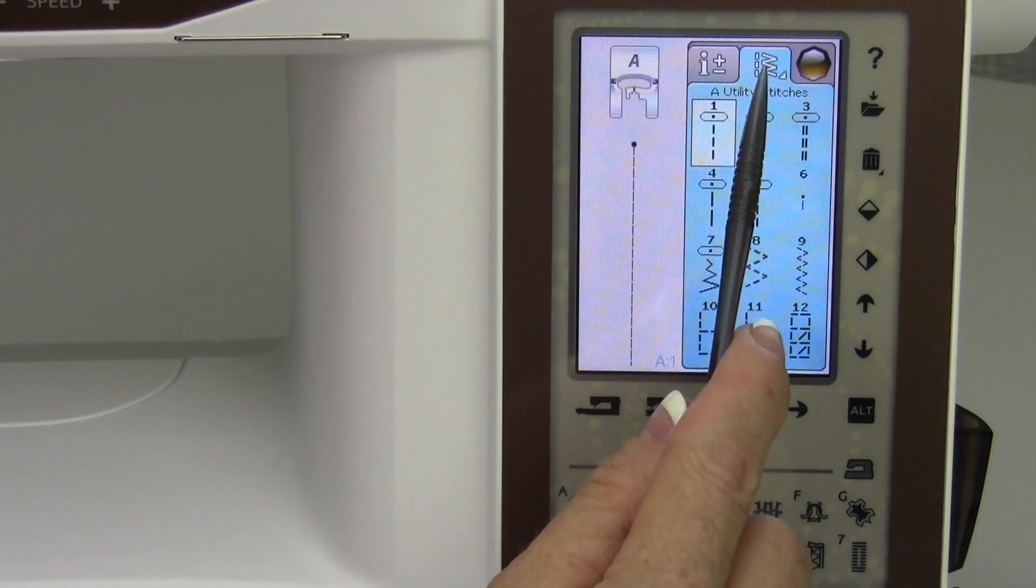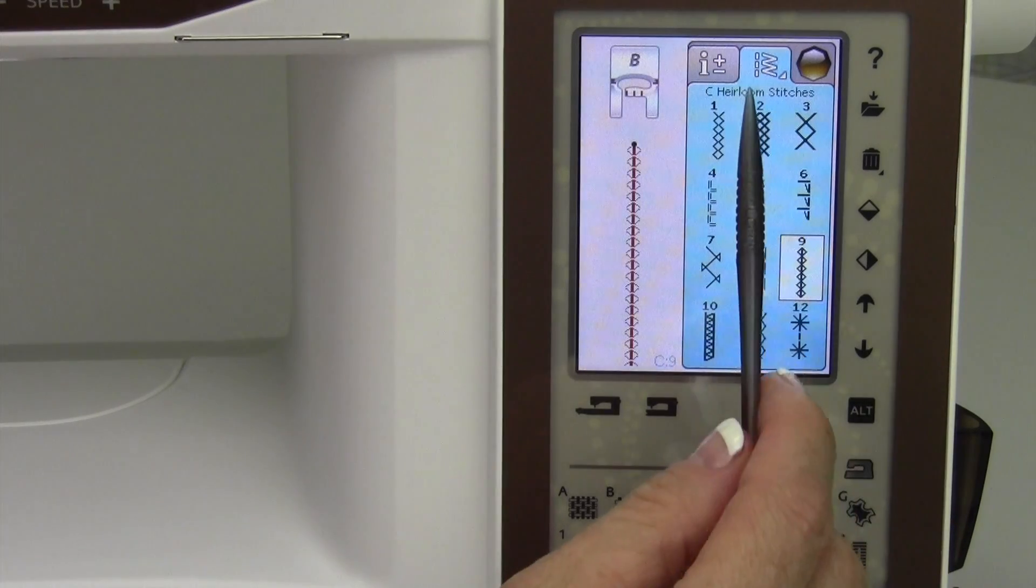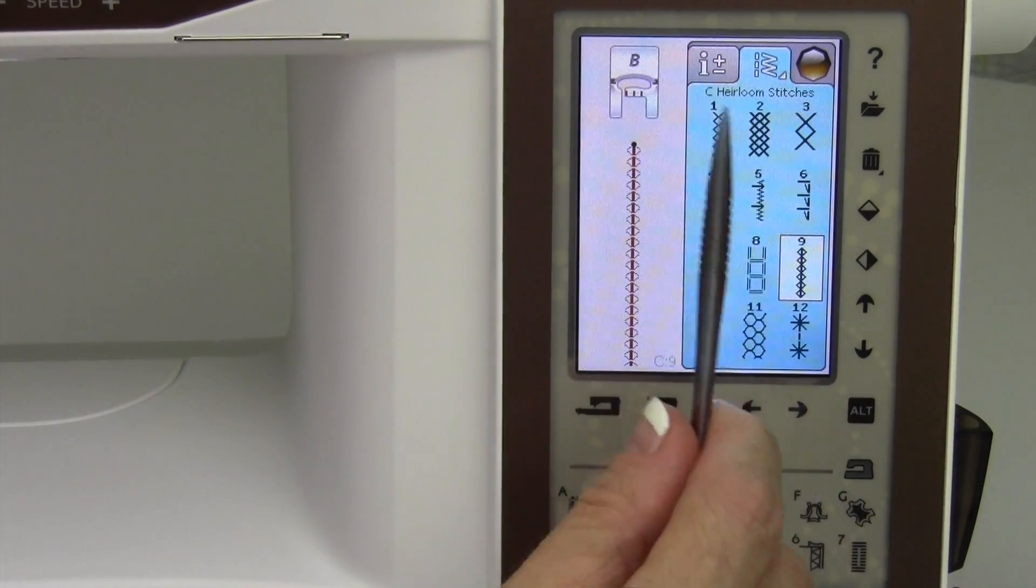Here is a faster way. Let me just pull up a random decorative stitch. Okay, we're over here, heirloom stitches, menu C.